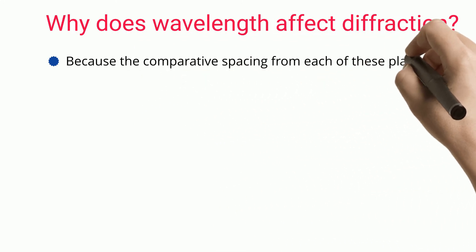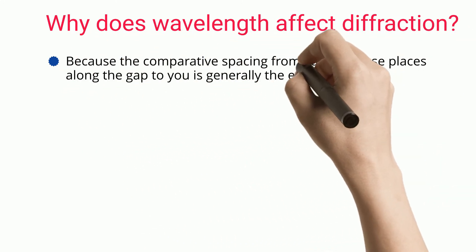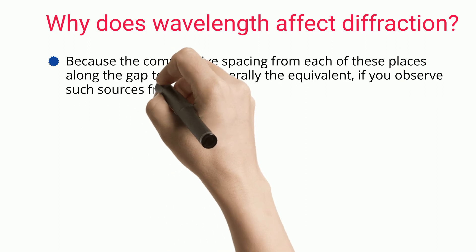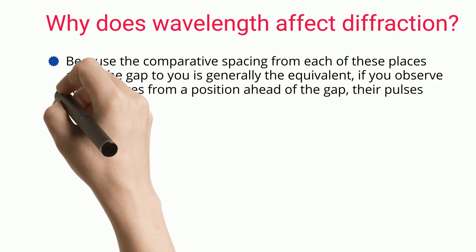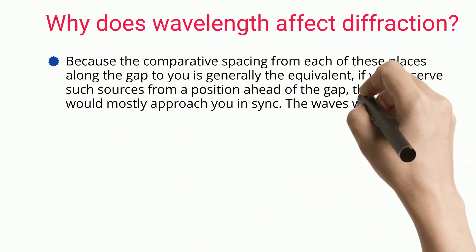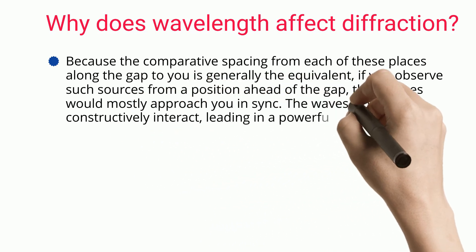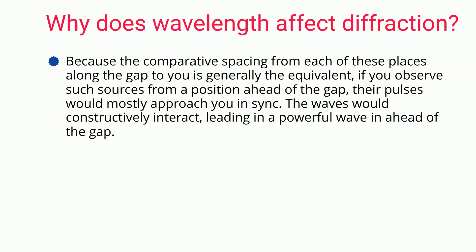Because the comparative spacing from each of these places along the gap to you is generally equivalent, if you observe such sources from a position ahead of the gap, their pulses would mostly approach you and sink. The waves would constructively interact, leading to a powerful wave ahead of the gap.